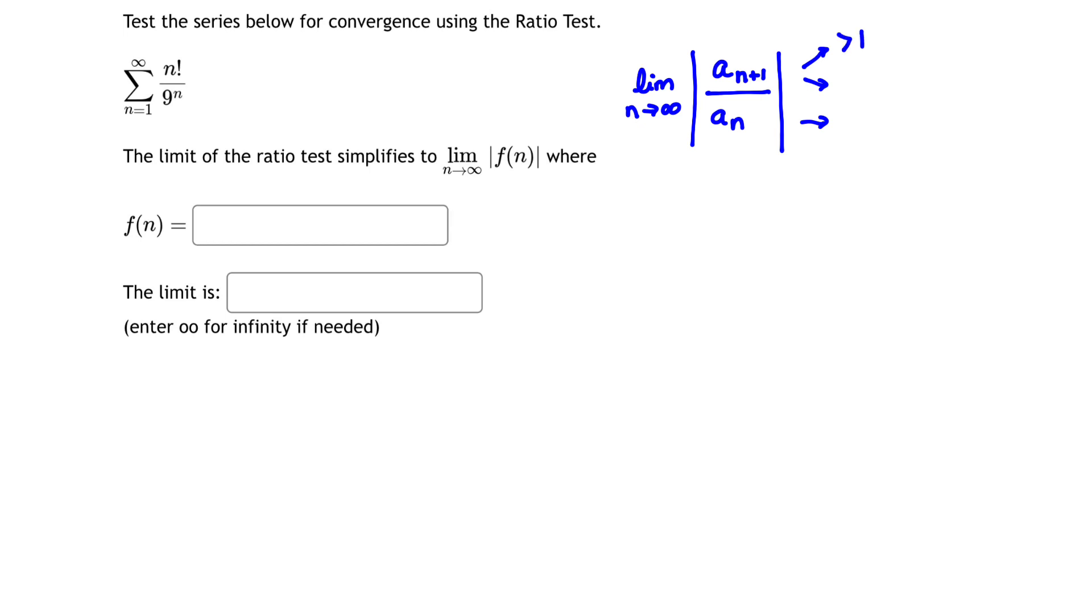If it's greater than 1, that means that our original series diverges. If it's less than 1, that means our original series converges. And if it's equal to 1, it means it's inconclusive. We need to do another test or do some more evaluation to determine whether our series converges or diverges.